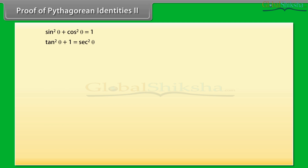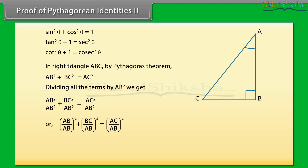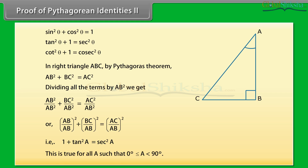Proof of Pythagorean Identity 2: Similarly we will prove these two identities. In right triangle ABC, by Pythagoras theorem, AB square plus BC square is equal to AC square. Dividing all the terms by AB square, we can write it as: AB upon AB whole square plus BC upon AB whole square equals AC upon AB whole square. That is, 1 plus tan square A is equal to sec square A. This is true for all A such that 0 degree is less than or equal to A which is less than 90 degree.